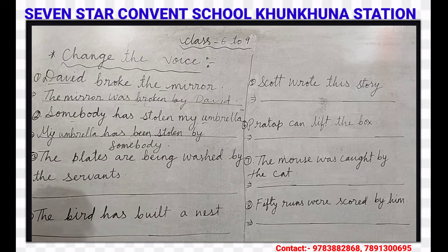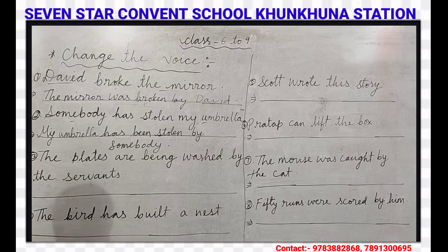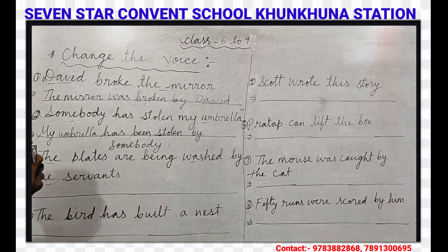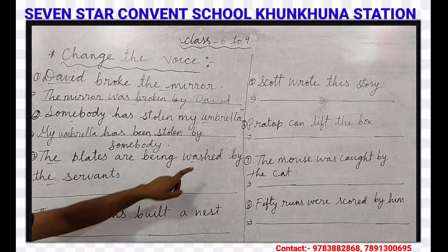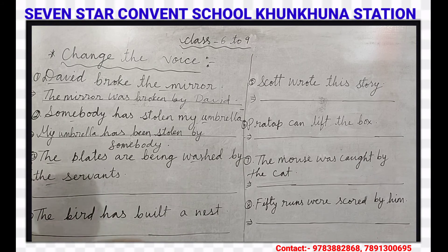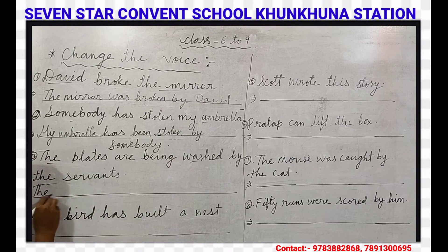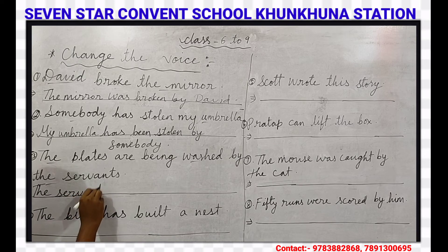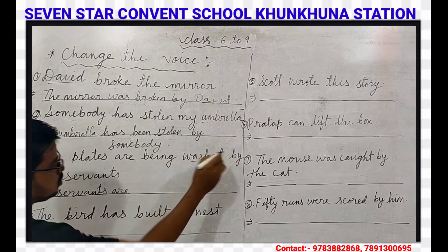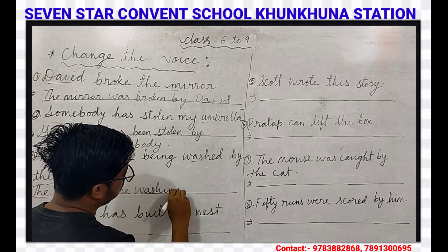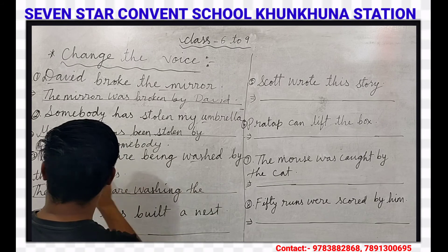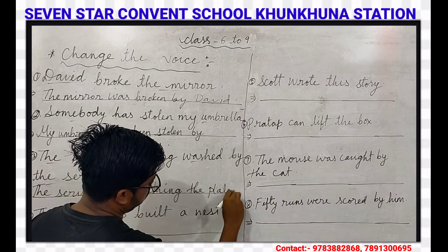Our next question: The place was being washed by the servant. This is present continuous tense and the sentence is in passive voice, so we have to change it into active voice. The servant is the object and the place is the subject, and the verb is 'washed' in third form. While changing into active voice, we write the verb in -ing form. The servants are washing the plates.